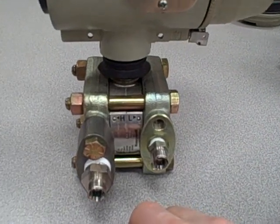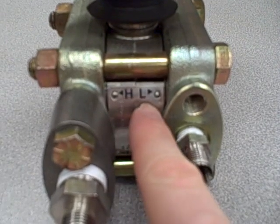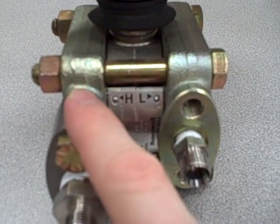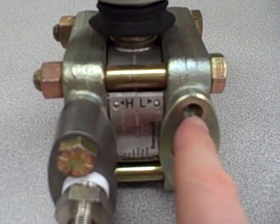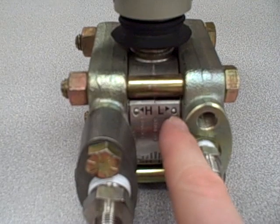If we look closely at the sensing cell, we will notice two letter labels, a letter H and a letter L. The H represents the high side of the sensing cell. The letter L represents the low side of the sensing cell. H stands for high, L stands for low.